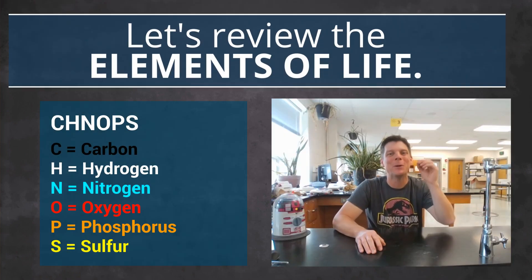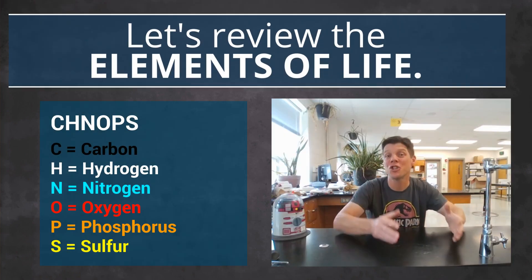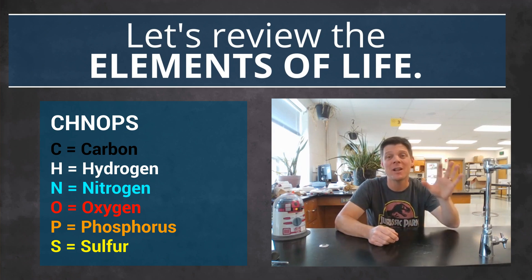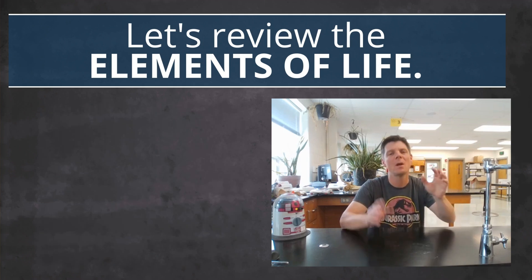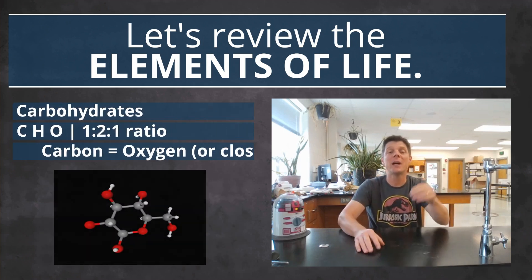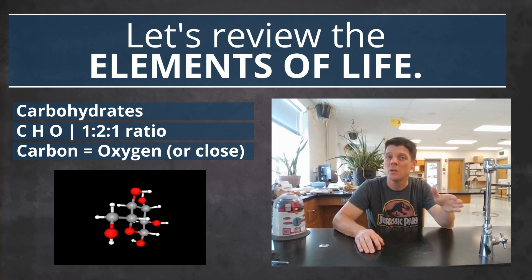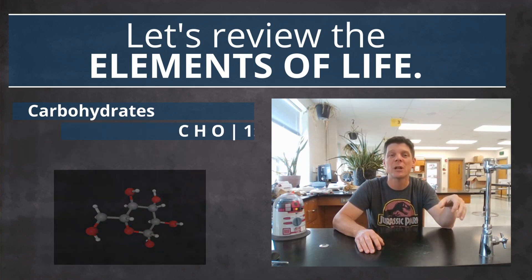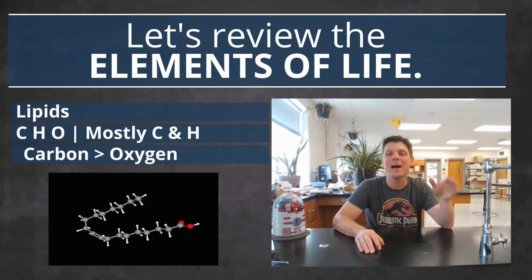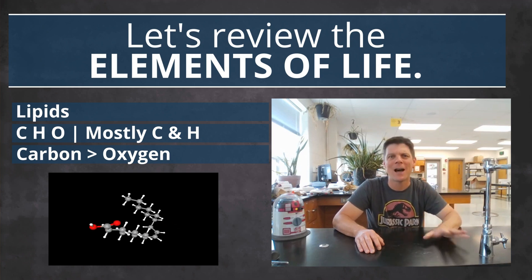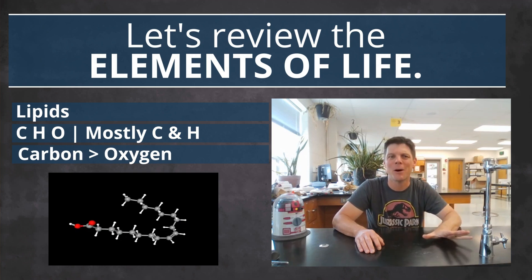So let's do a quick review. The most important elements to life are SCHNOPS: carbon, hydrogen, nitrogen, oxygen, phosphorus, and sulfur. Carbohydrates are made of carbon, hydrogen, and oxygen in a one-to-one ratio. Lipids have carbon, hydrogen, and oxygen, but a lot less oxygen than carbohydrates.